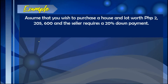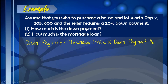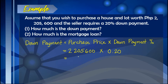Let us have an example. Assume that you wish to purchase a house and lot worth $2,205,600 and the seller requires a 20% down payment. How much is the down payment? To solve for the down payment, we follow the formula: down payment equals purchase price times the down payment percentage. So we have $2,205,600 multiplied by 20%, which in decimal is 0.20. This means that the 20% down payment of the house and lot is $441,120.